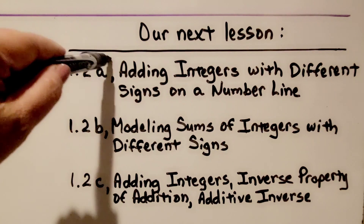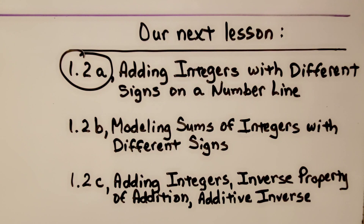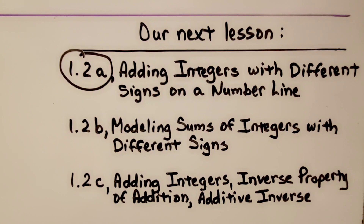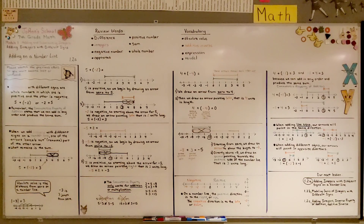We're now finished with this lesson and moving on to the next part: modeling sums of integers with different signs, lesson 1.2b. Remember: when adding like signs, arrows go in the same direction; when adding different signs, arrows point in opposite directions. Have a great day, keep trying your best, and I'll see you next time!